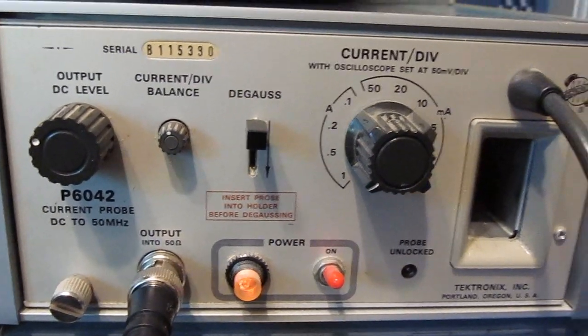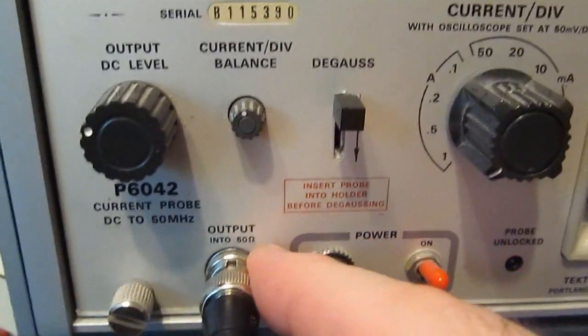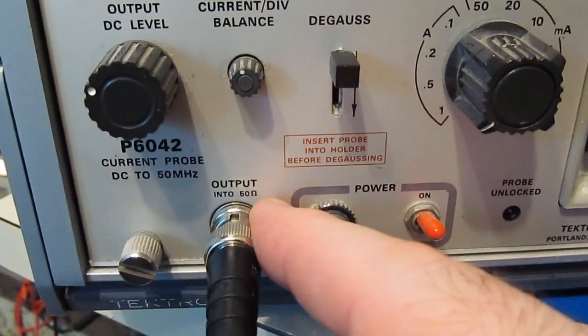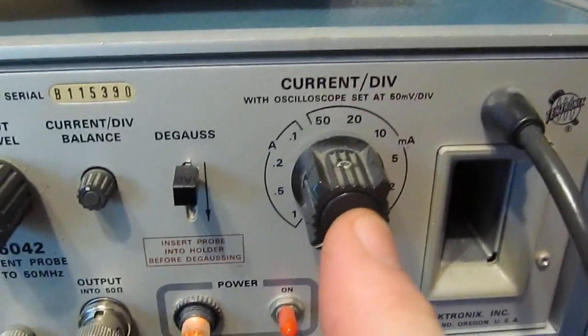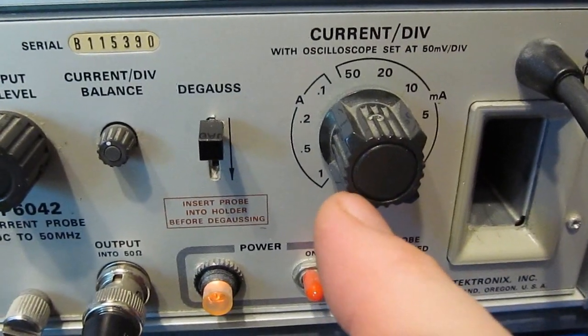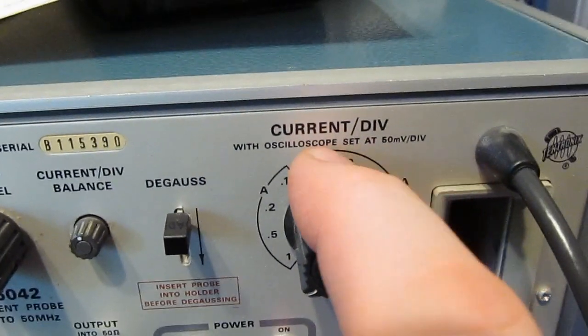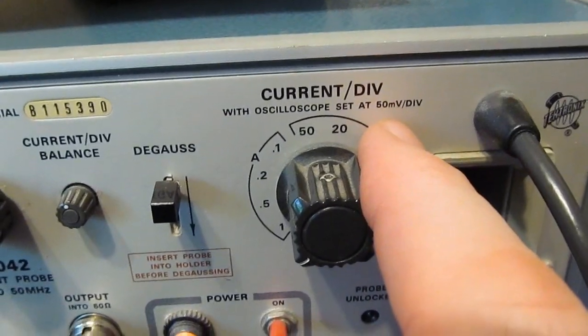This is my vintage Tektronix P6042 current probe. I can see that this requires the oscilloscope be set to 50 ohms. We're going to set this to the highest range, so one amp per division, and that requires the scope be set to 50 millivolts per division.